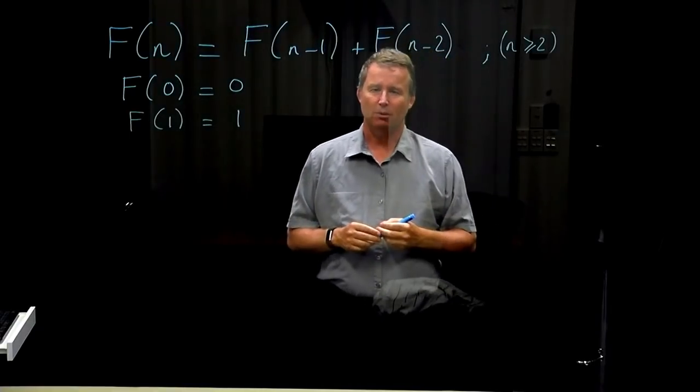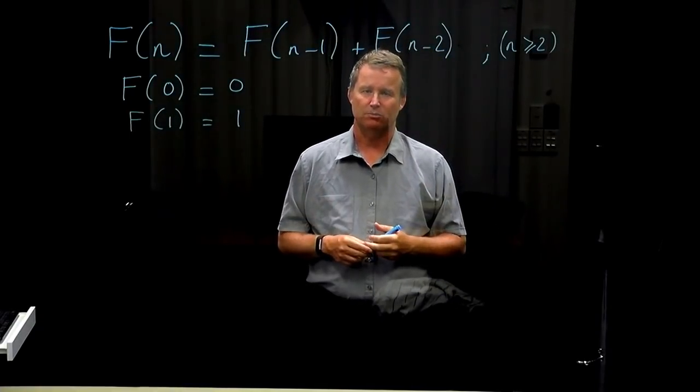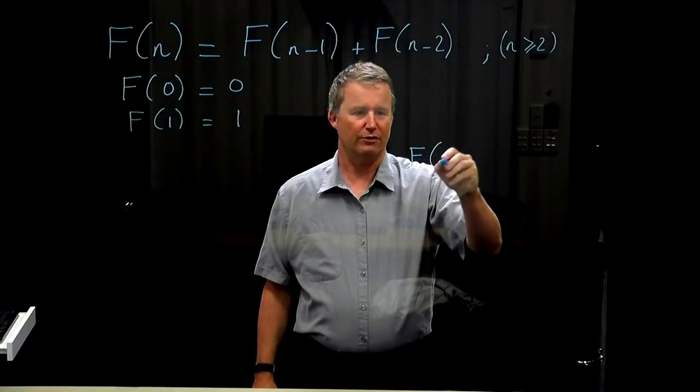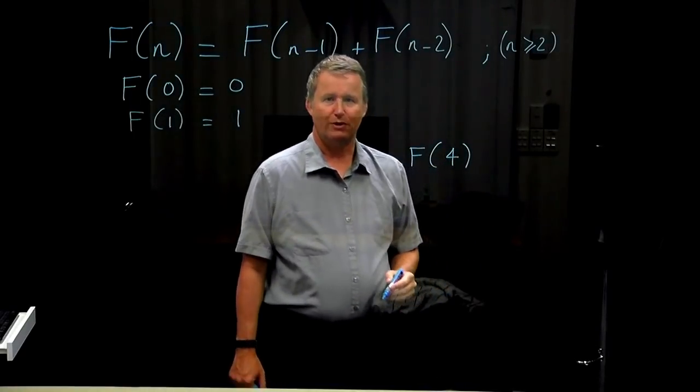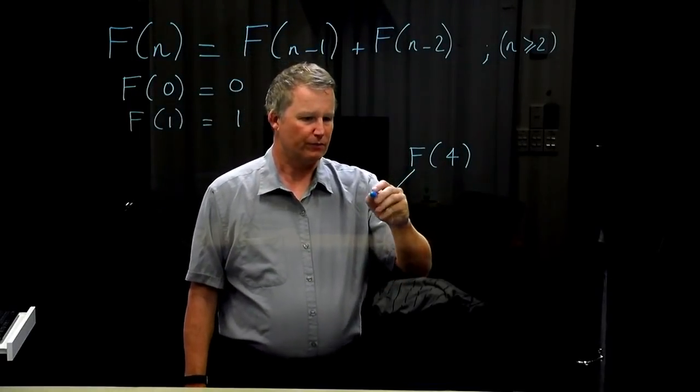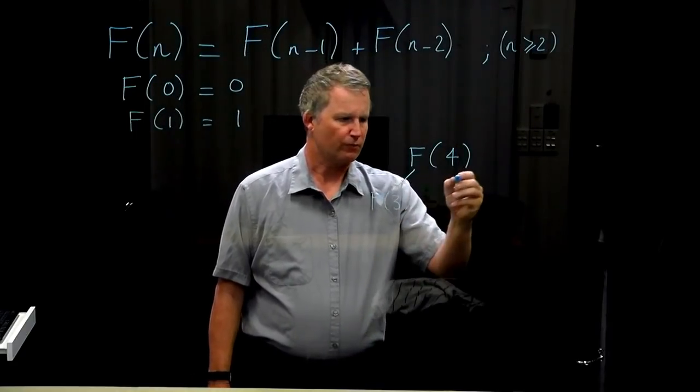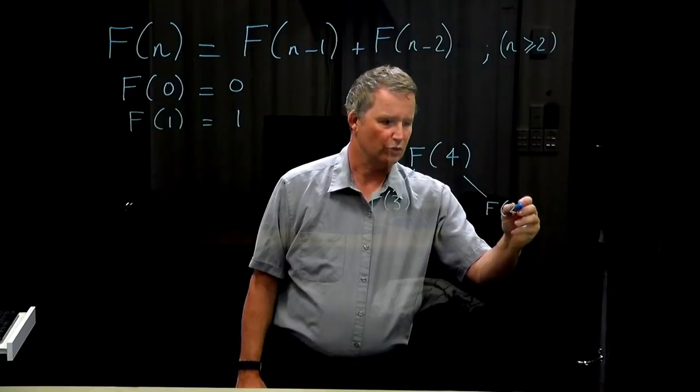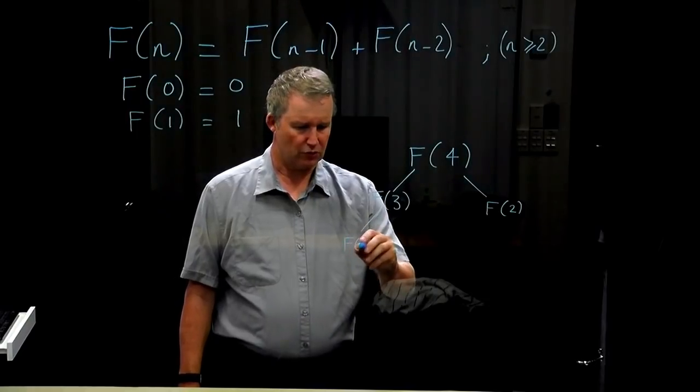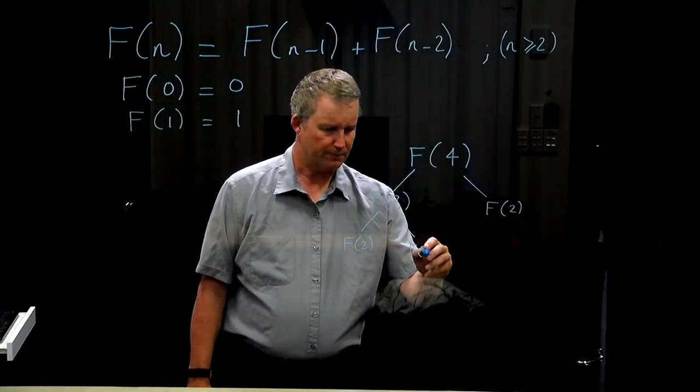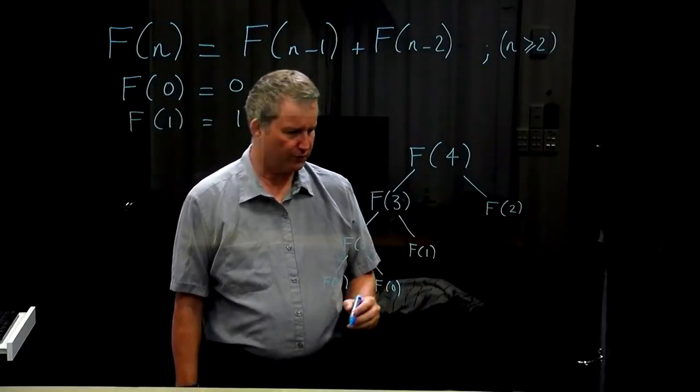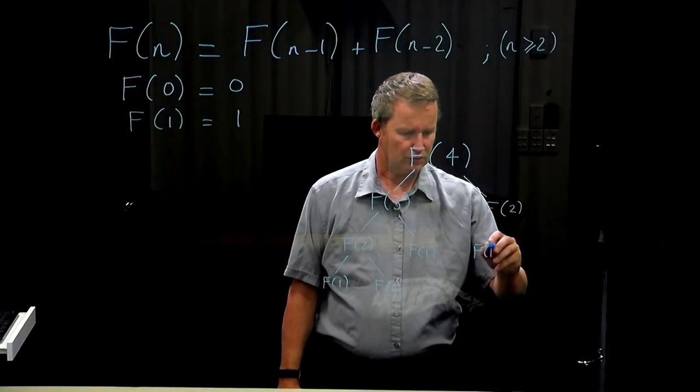However, there's a big problem with efficiency of this algorithm. I'm going to claim that this algorithm is extremely inefficient. We'll start by looking at an example. Suppose you want to calculate the value F of 4 using this definition. Well, you have to recursively compute F of 3 and F of 2. To compute F of 3, you then spawn some other recursive calls of 2 and F of 1. And here you have to do yet another recursive call. Two of them, in fact. And then here you have to do the same thing.